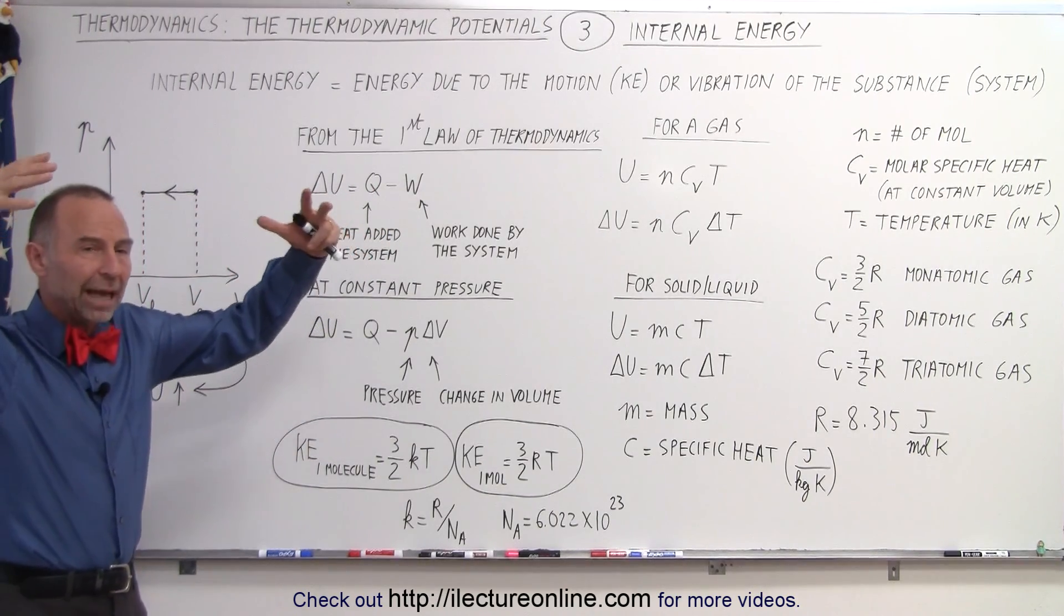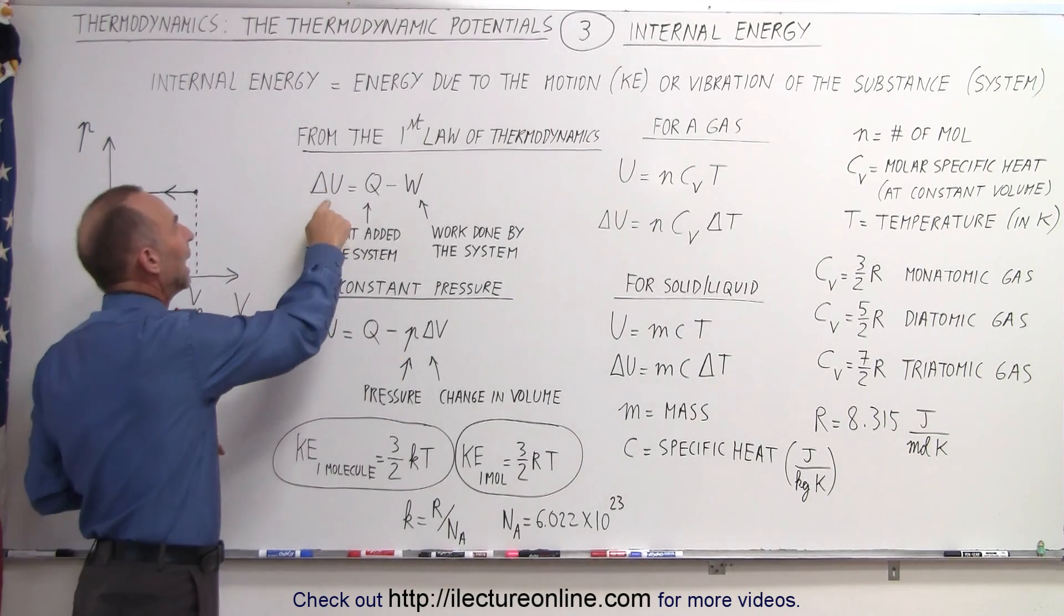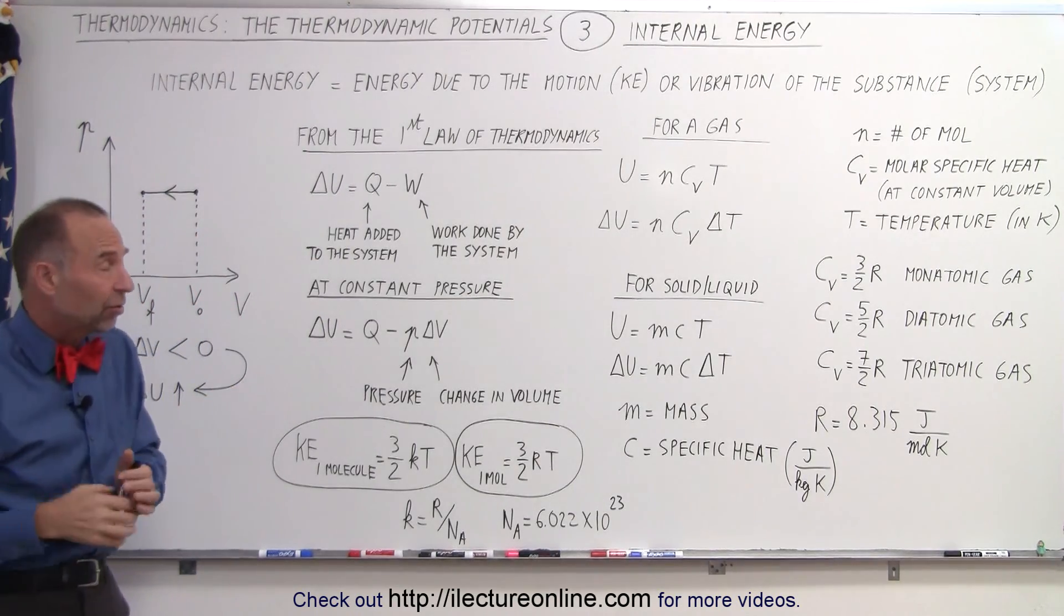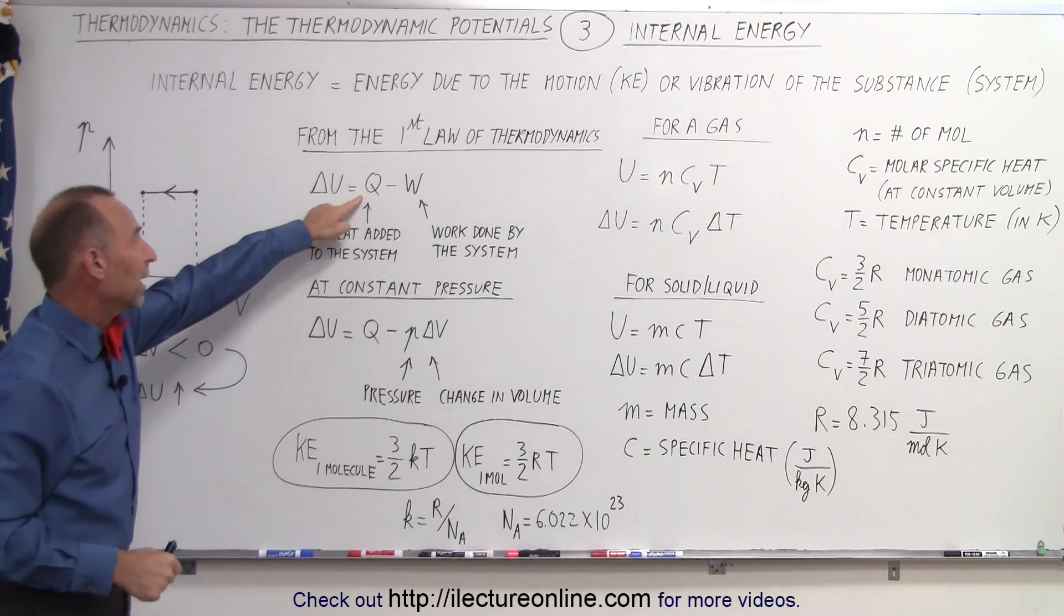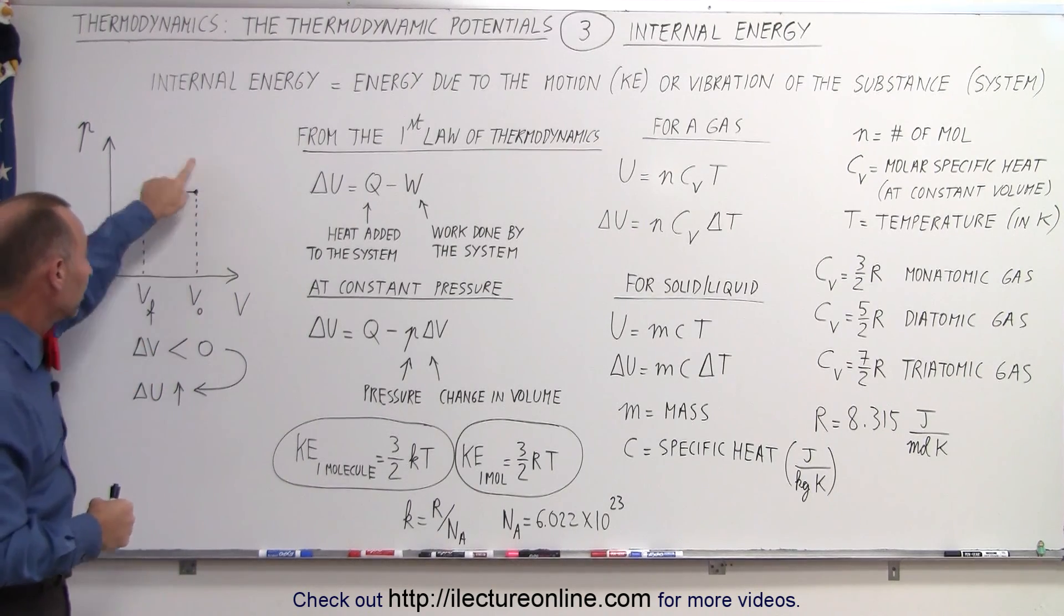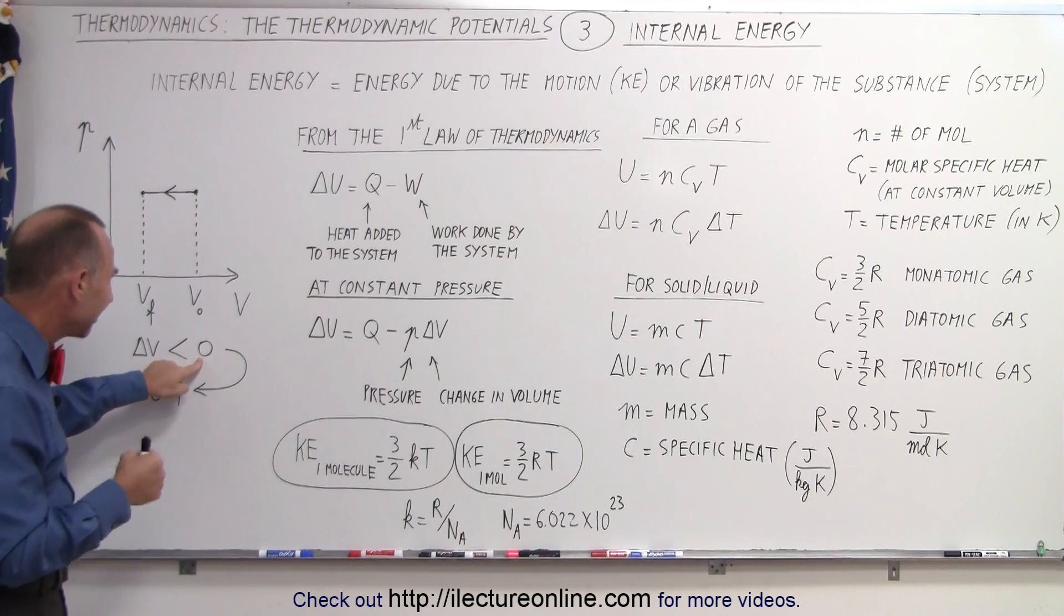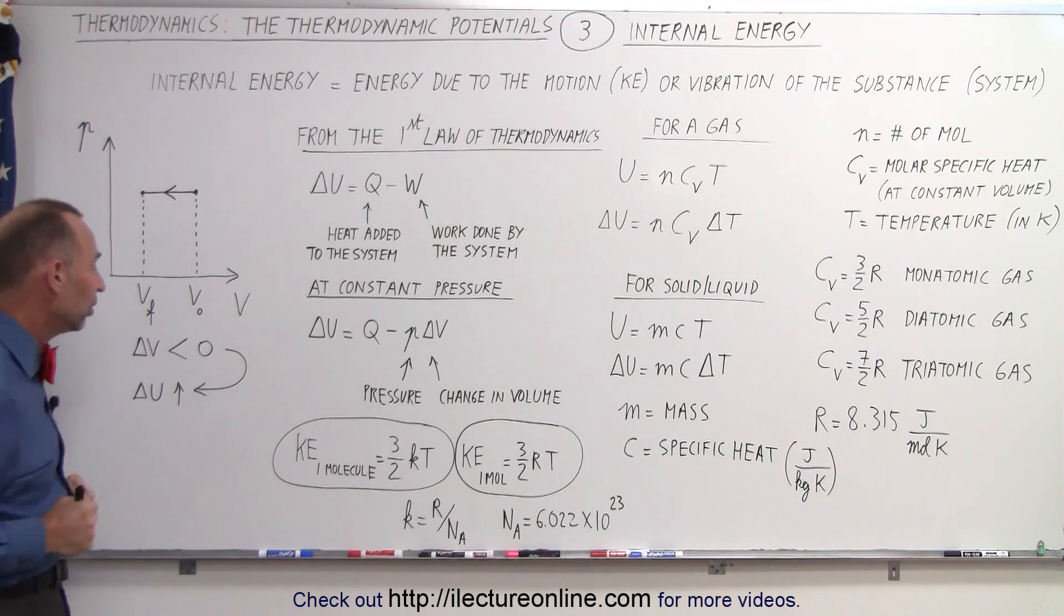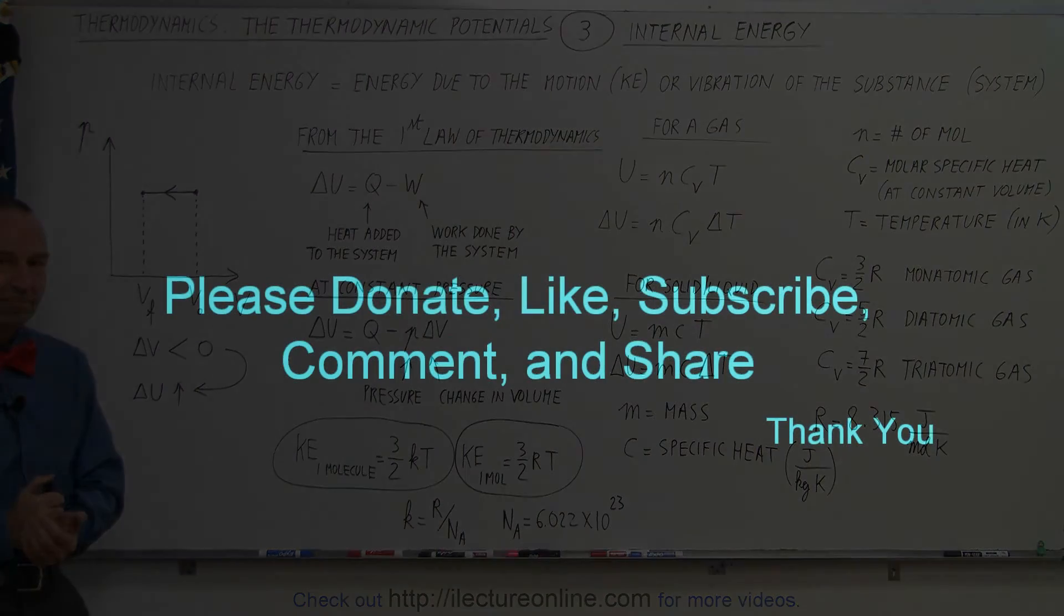But if the atmosphere pushes down on the system and compresses it, then it does work on the system and then delta U goes up. And so, that's what then defines the internal energy of the system and how the internal energy of the system changes: two parts, heat added or subtracted, work done by the system or work done on the system. This example here shows work done on the system, delta V goes down, so the change is less than zero, it's a negative change, therefore it causes the internal energy to go up. And that's how we define internal energy. Thank you.